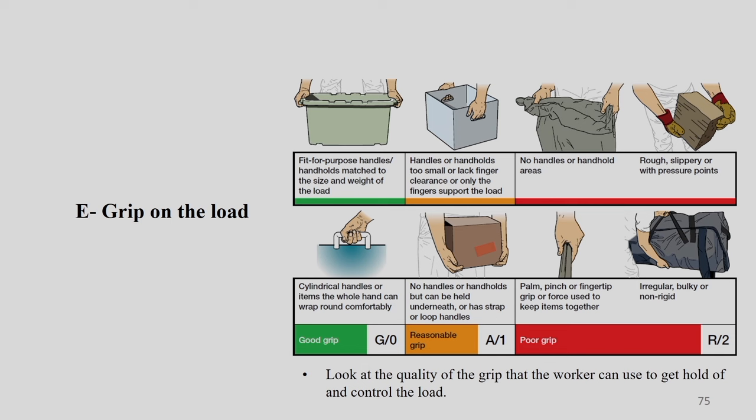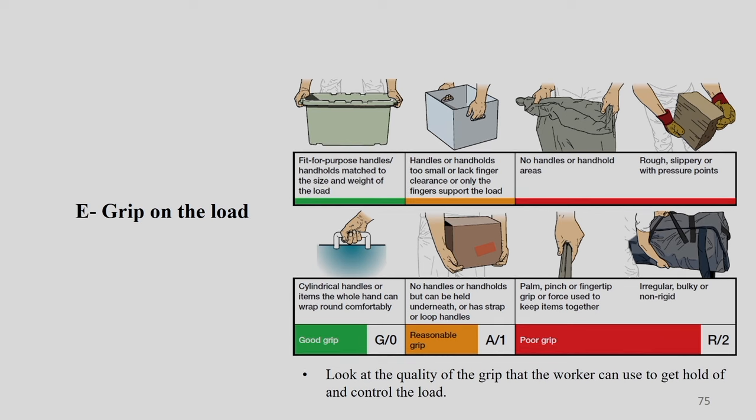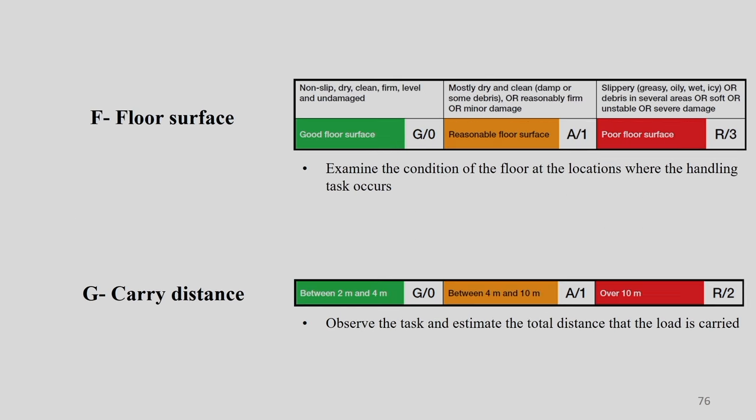For poor grip: no handles or handholds, such as sacks or plastic bags; rough or slippery surfaces with pressure points; palm pinch or fingertip grip; force used to keep items together; or irregular, bulky, or non-rigid items. All these cases represent poor grip — red color and value 2. This is how we calculate the values for grip on load.